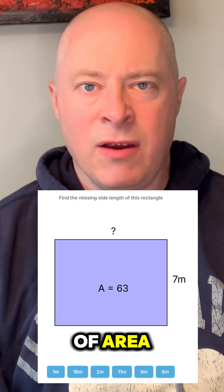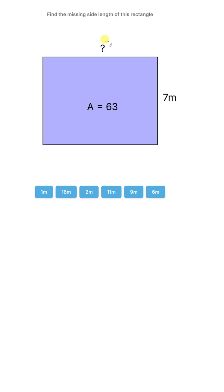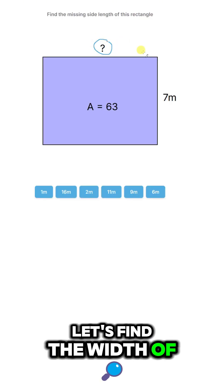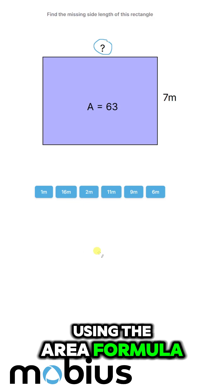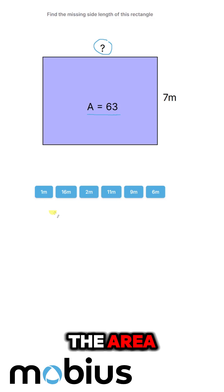Let's deepen our understanding of area by working with the formula in reverse. Let's find the width of this rectangle using the area formula, but in this case we're going to use the area formula backwards because we already know the area.